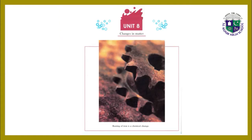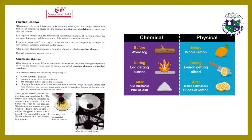The topic is Change in Matter. The rusting of iron is a chemical change. When an ice cube melts, it is easy to make the water freeze again. You can get the salt back from a salt solution by evaporating the solution. Melting and dissolving are examples of physical change. In a physical change, only the behavior of the particles changes; the actual particles are the same throughout.